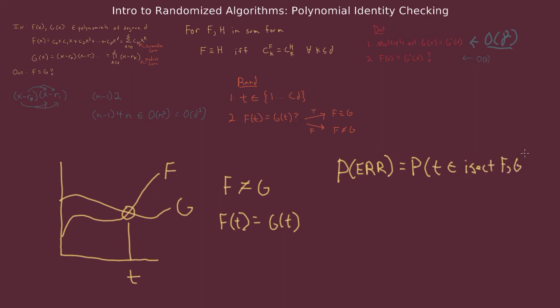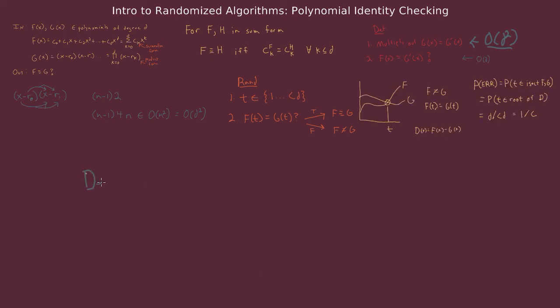Now for polynomials of degree d, it's possible to count the number of intersection points. So we can actually find the probability of this error occurring. In order to count the number of intersection points, we note that the intersection points are equivalent to the roots of a polynomial D, which is the difference of f and g. So if f of t and g of t are identical, D of t is going to be zero, implying that t is a root of D. And we know that D has at most d roots because the degree of D cannot be any greater than f and g. So since we selected from c times d numbers, we know the probability of selecting a root is 1 over c.